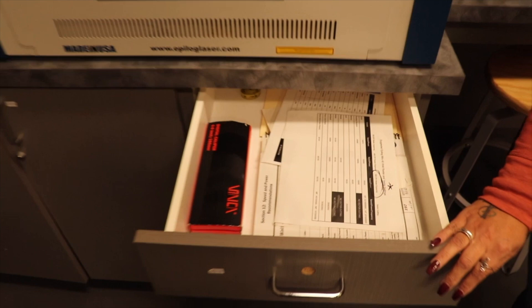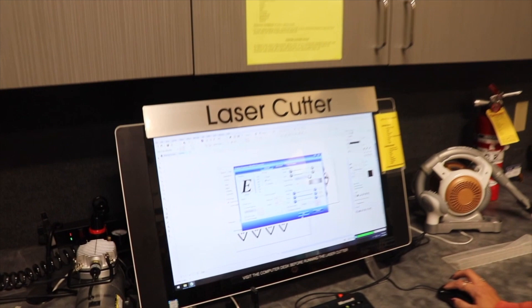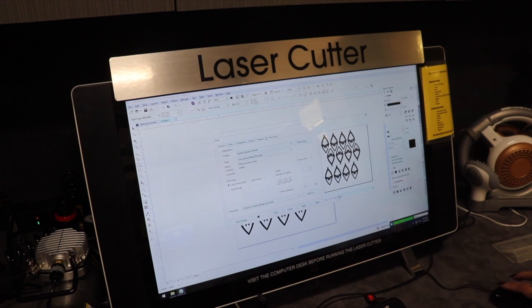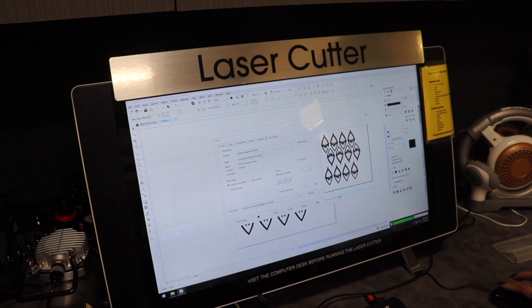It will tell you all the settings per cut or whatever file you're making. We will set that up, which I have already said. Press OK, apply it first, and then send it to the printer.